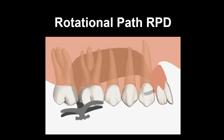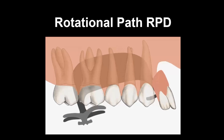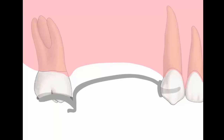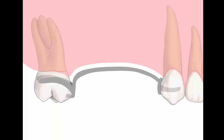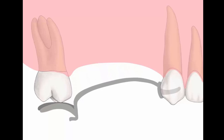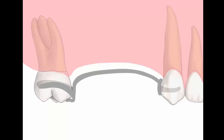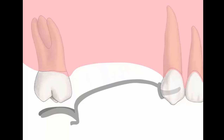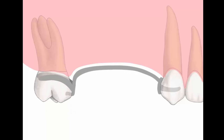There are various animations related to a rotational path removable partial denture and how it would be seated. In this particular example, the anterior to posterior type of rotational path removable partial denture has no clasp anteriorly, and it rotates around the anterior aspect of the long rest that extends toward the mesial aspect of the canine, with the clasp located on the posterior tooth.